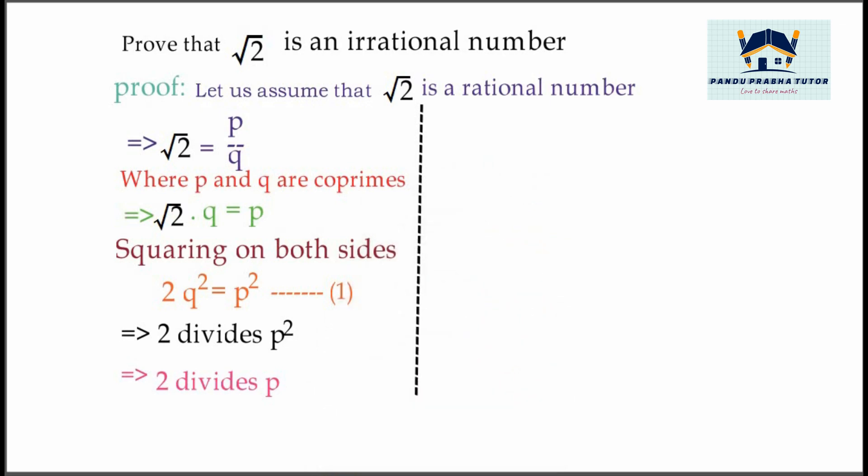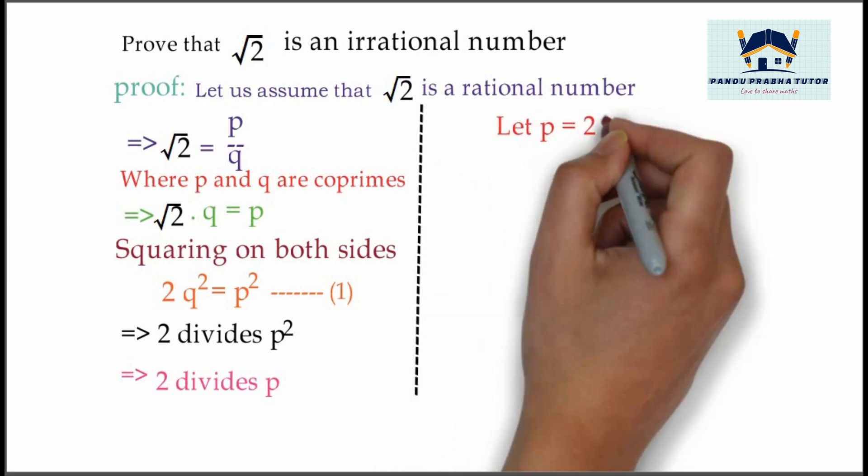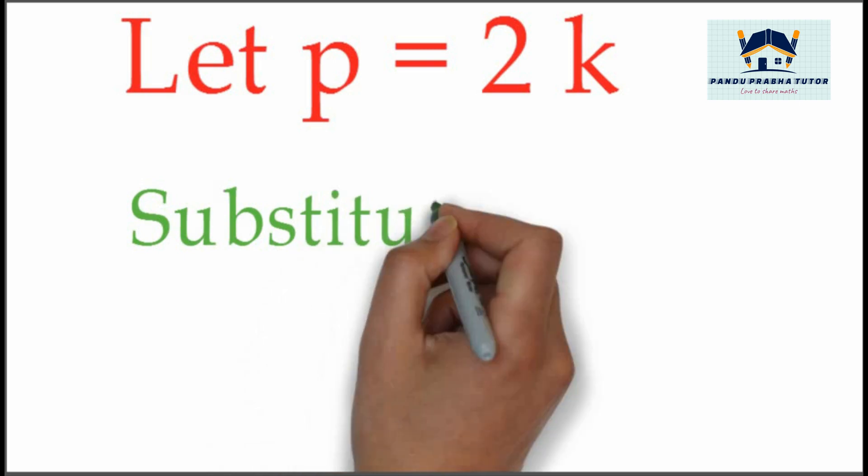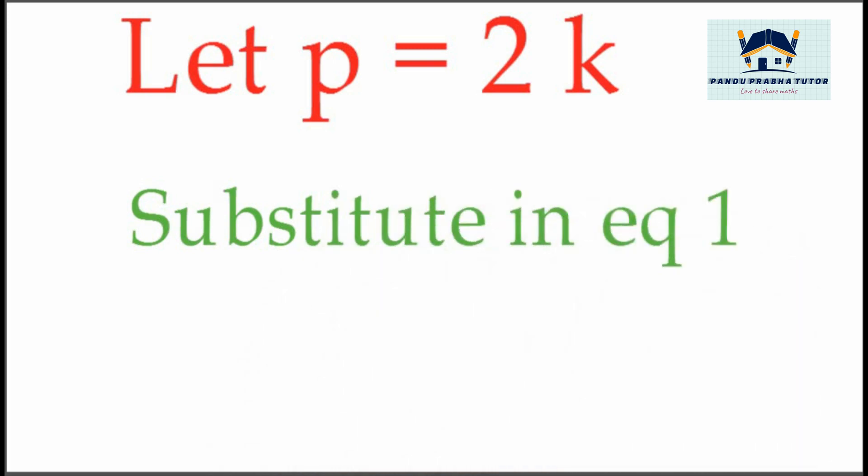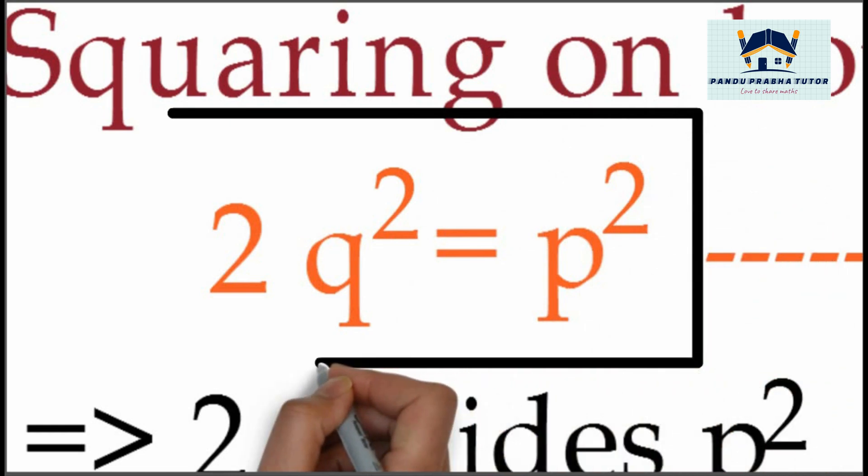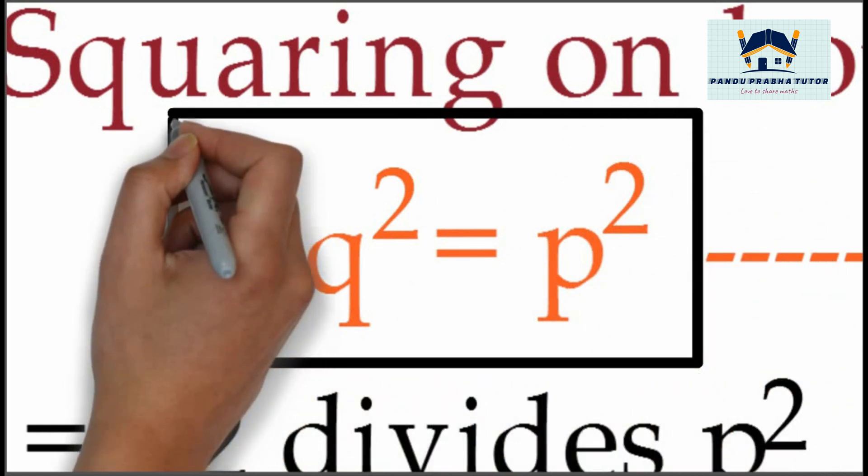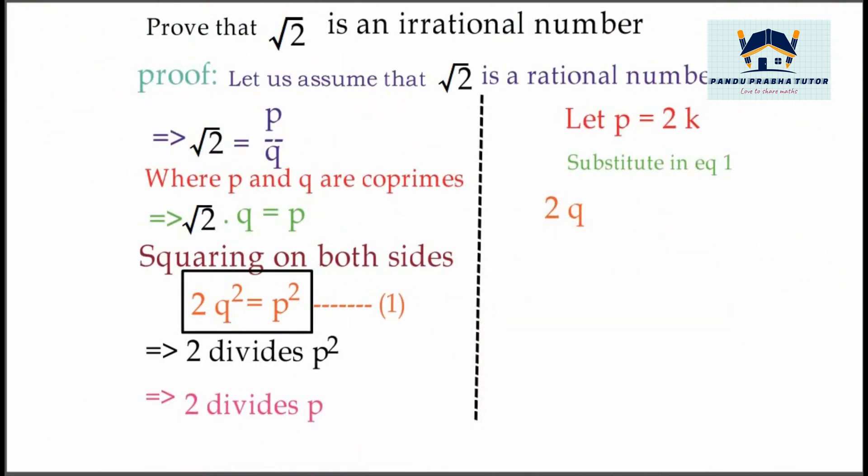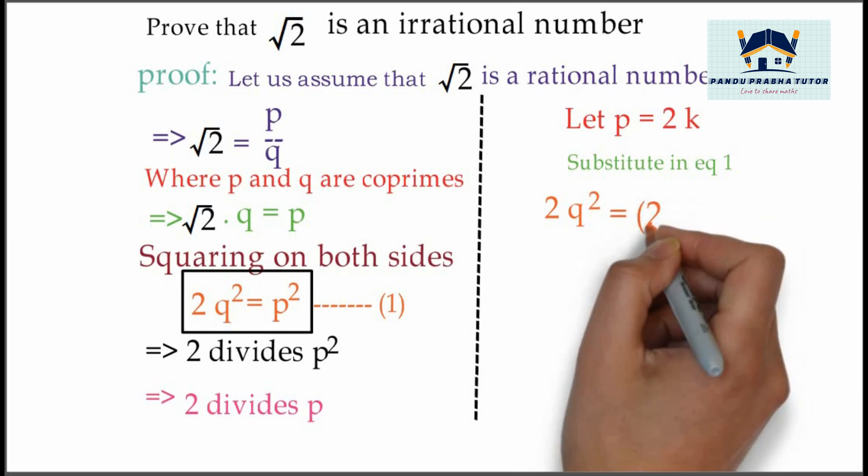Now we will take the second part. 2 divides p, that means let p = 2k, the product of 2 with some integer. Substitute this in equation 1: 2q² = p² becomes 2q² = (2k)².